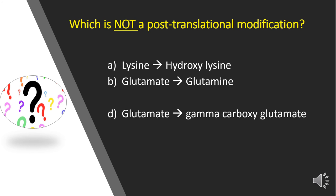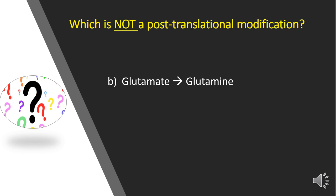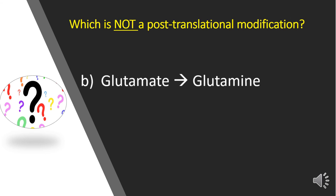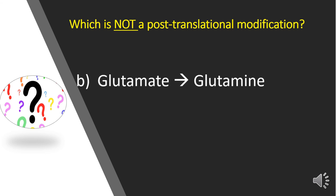So let us go back to the question. We can rule out lysine to hydroxylysine and glutamate to gamma-carboxyglutamate. What is left now? It is glutamate to glutamine — so that is the answer.